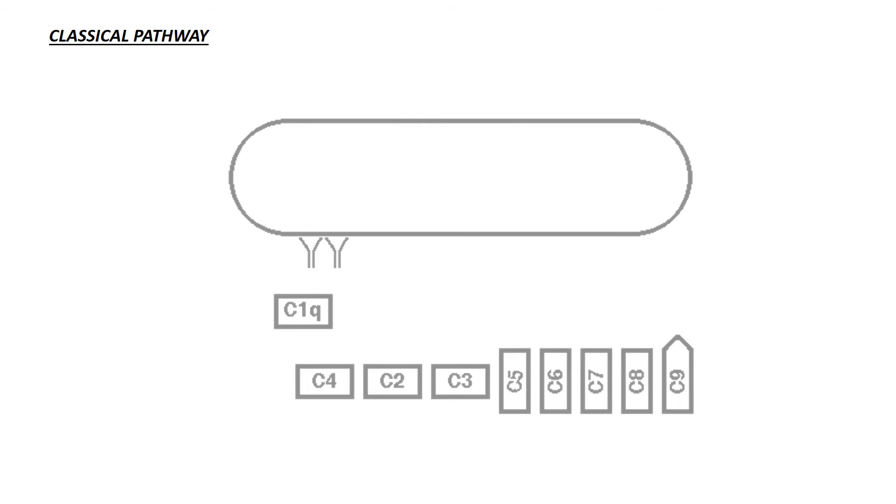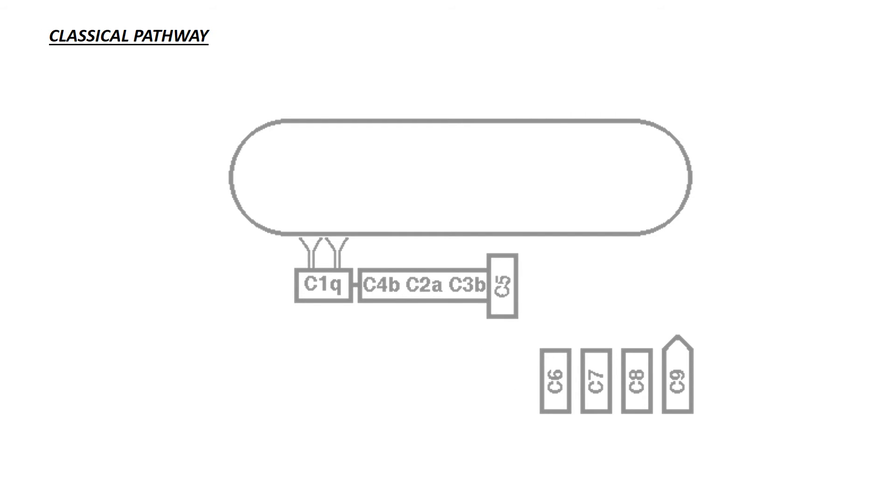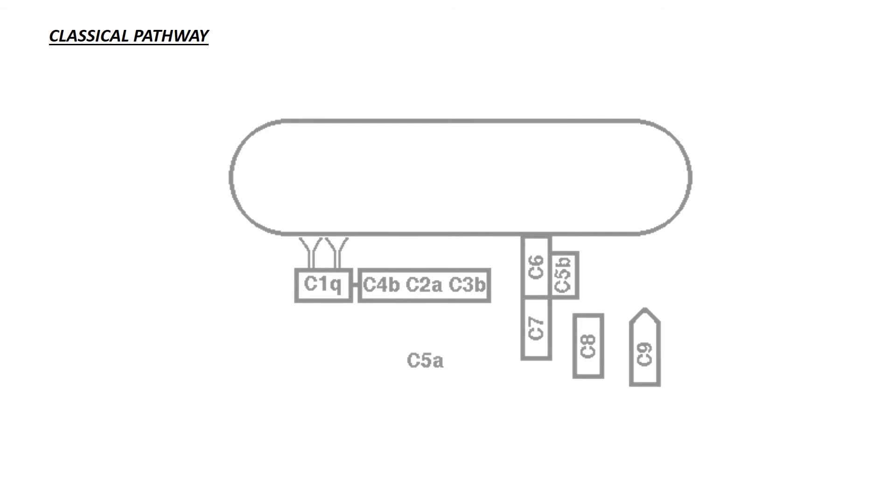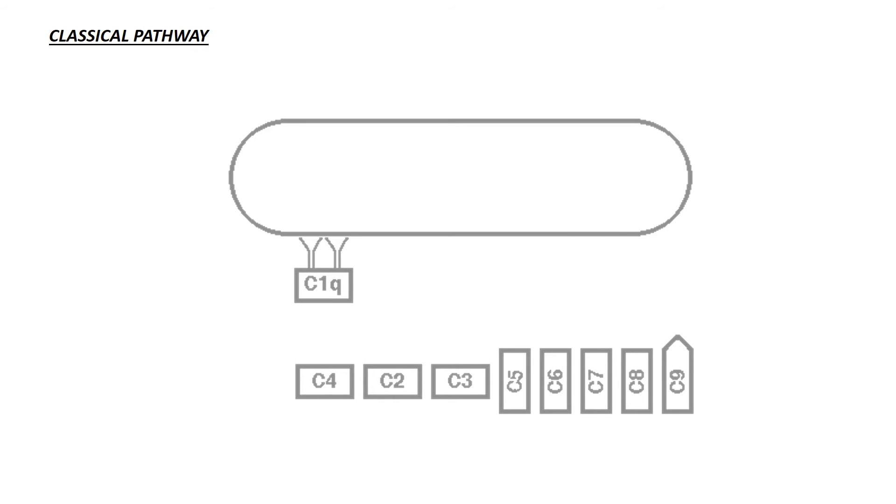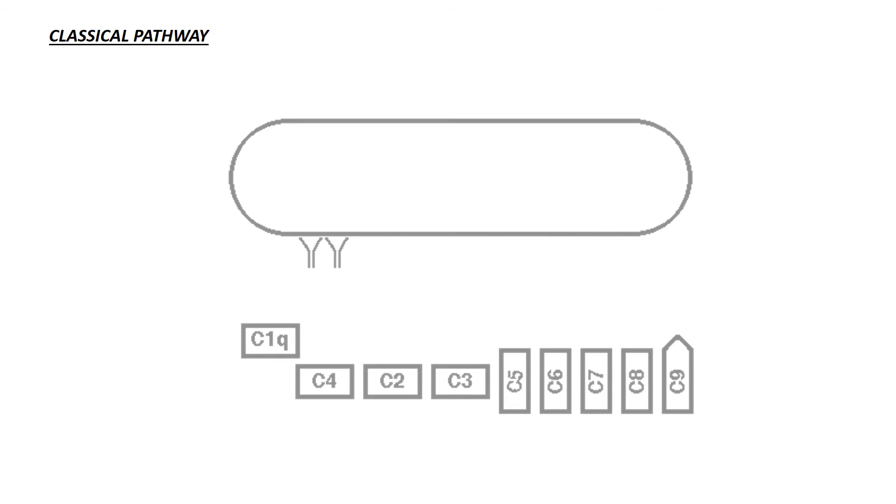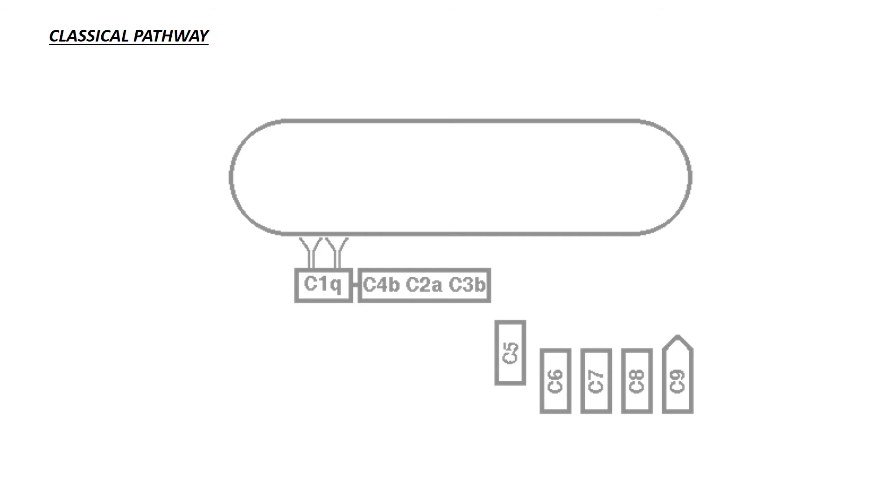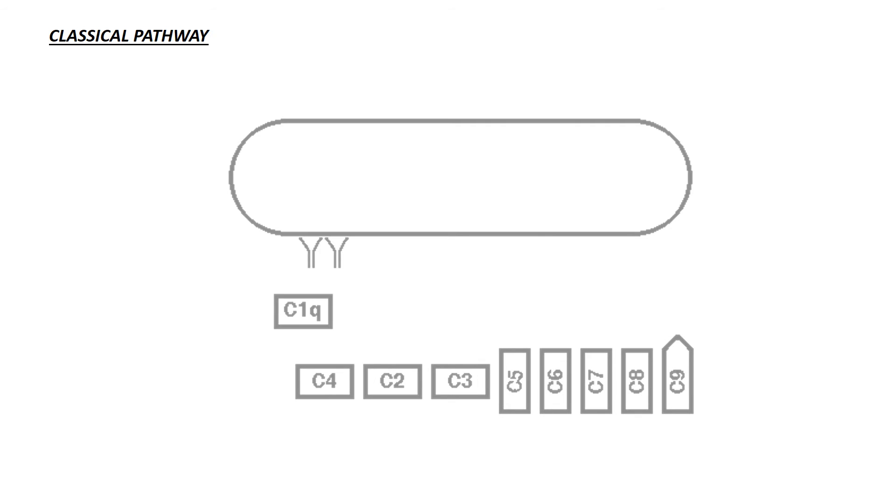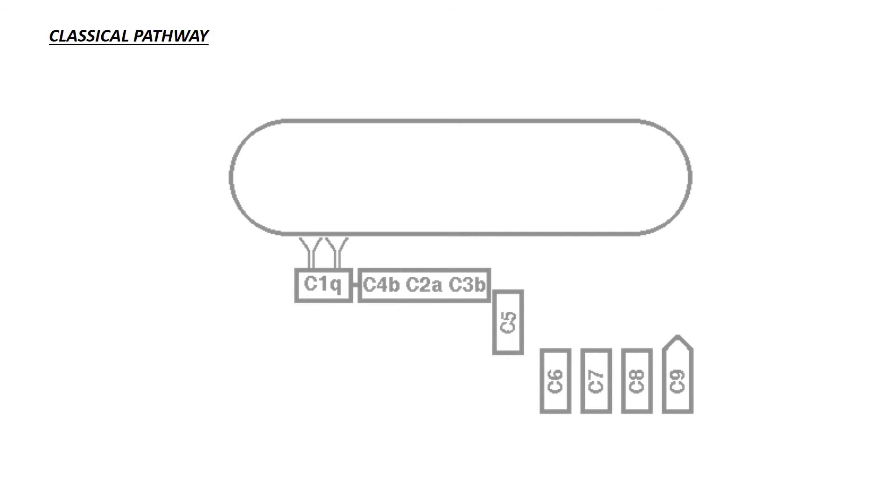It is activated by antigen-antibody complexes. C1 is a complex made of hexamer C1Q and serine proteases C1R and C1S. C1Q binds to the FC region of the antibody. Activated C1S cleaves C4, and C4B either binds to the antigen-antibody complex or to the adjacent cell surface. C1S also cleaves C2, and the C4BC2A complex is the C3 convertase of the classical pathway. C3B formed can either follow the alternative pathway or bind to C4BC2A to form C5 convertase. C5B follows the MAC pathway.